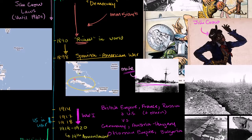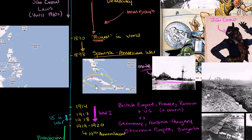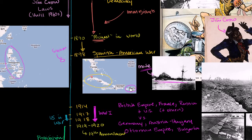The big takeaway from the Spanish-American War is that the United States essentially became an empire — it started to have control of other countries. In particular, it had temporary control of Cuba. Because it won, it got control of Guam, which it still holds today. It also got control of the Philippines from Spain, and maintained control of the Philippines until the end of World War II. And it got control of Puerto Rico, which is still part of the United States — not an official state, but United States territory.